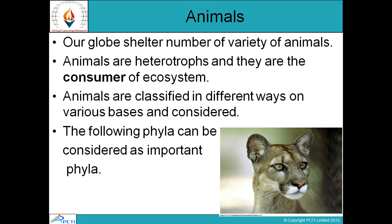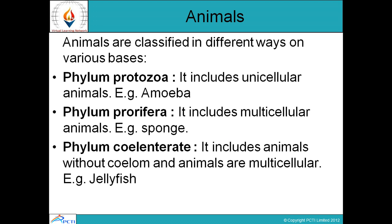Now coming to animals. Animals show a great number and variety. They are basically heterotrophs — they are consumers of the ecosystem. Plants are producers and may be autotrophs, but animals are heterotrophs. Animals are classified in different ways on various bases. The following phyla can be considered as important phyla in the animal kingdom.